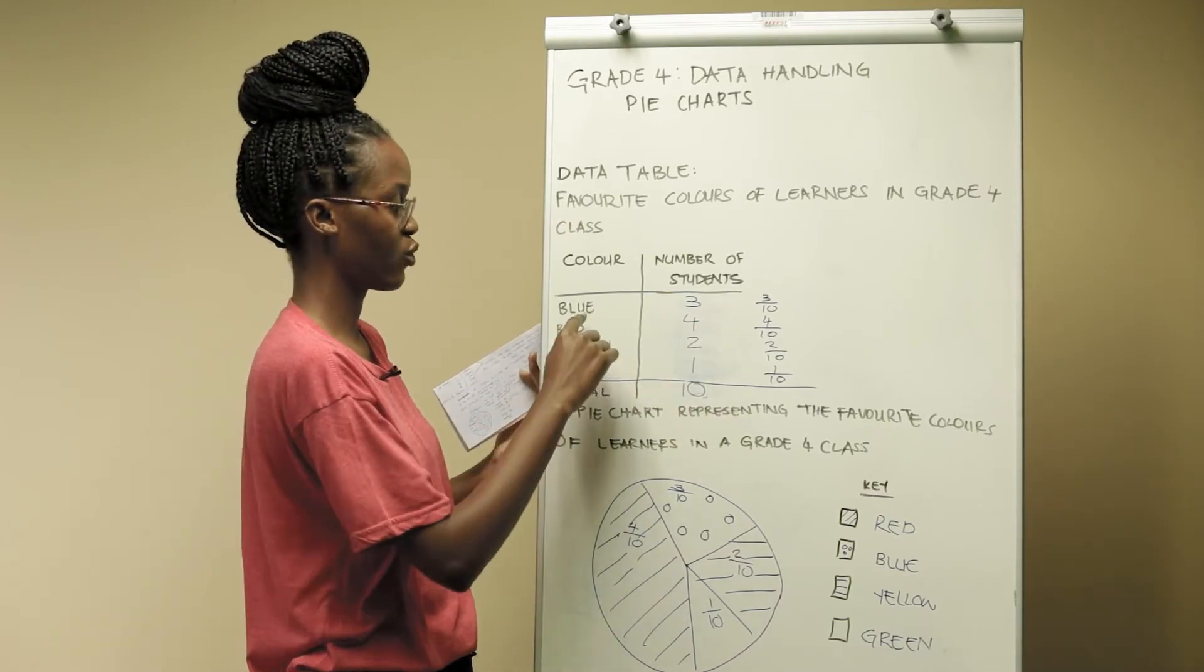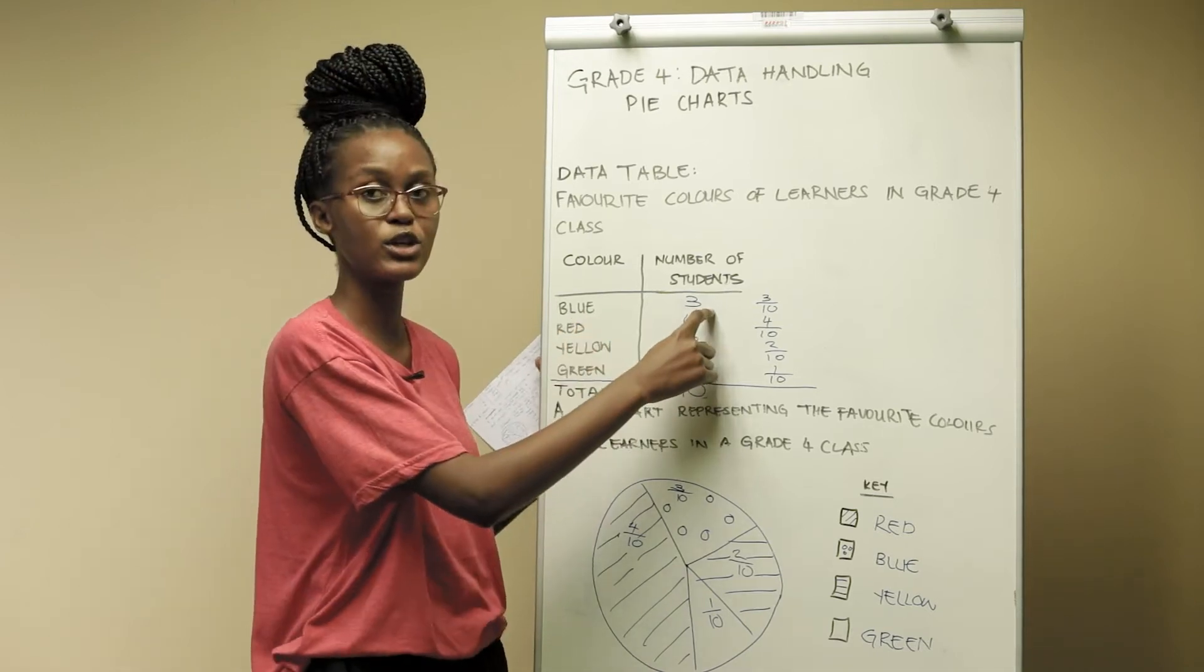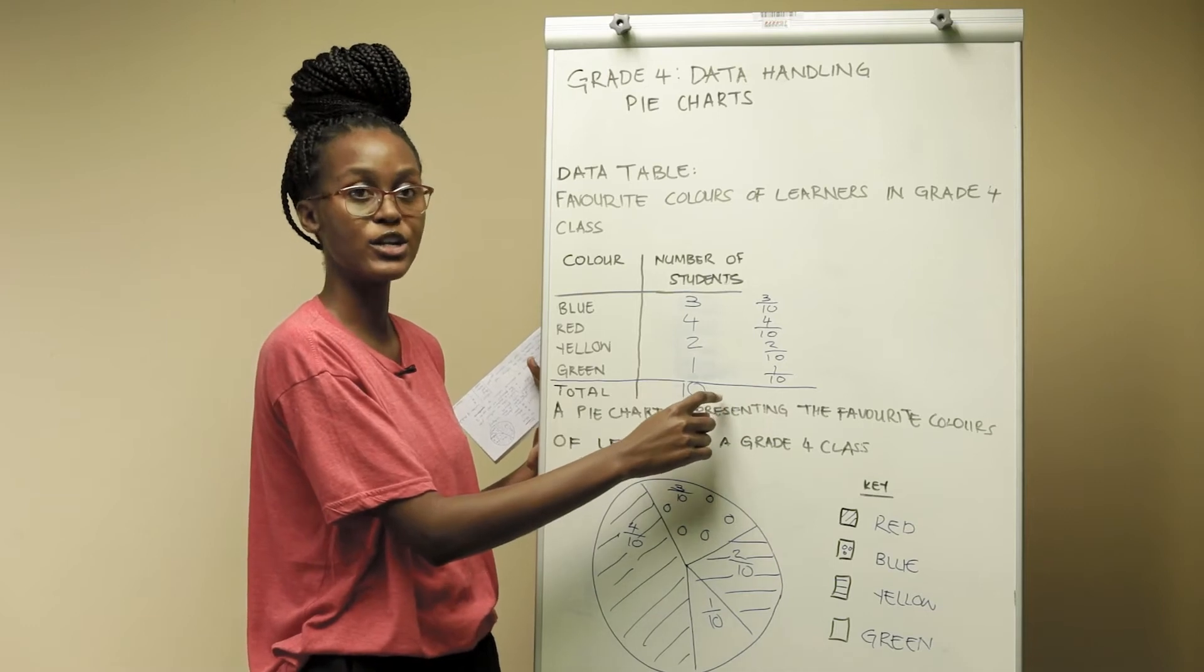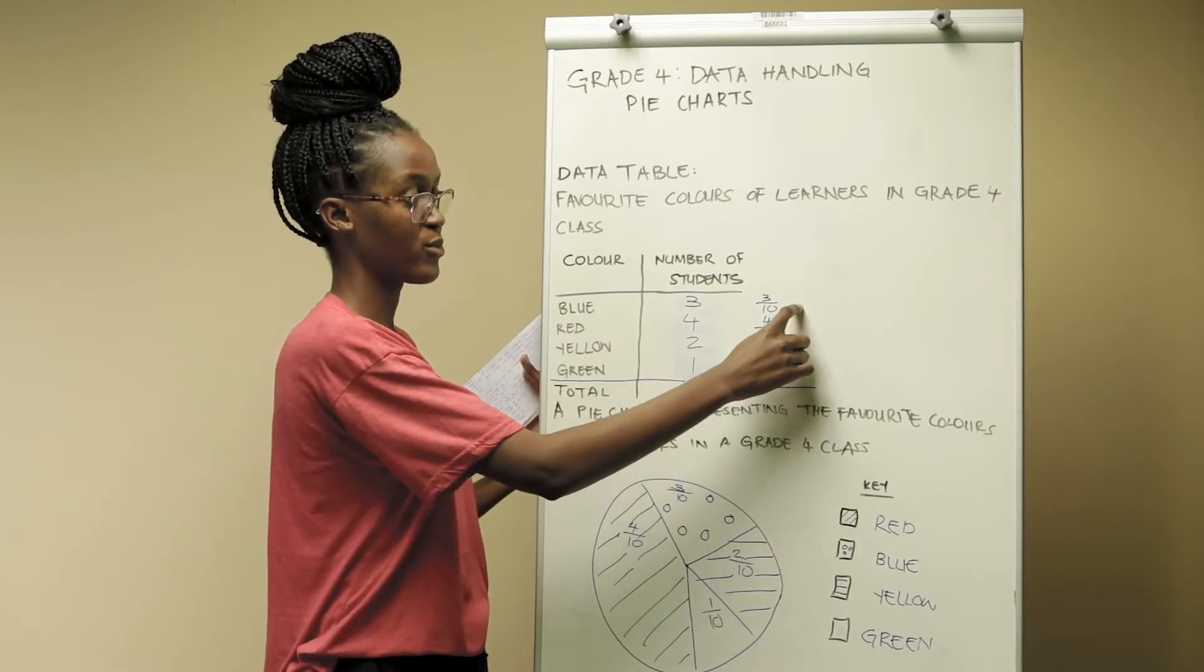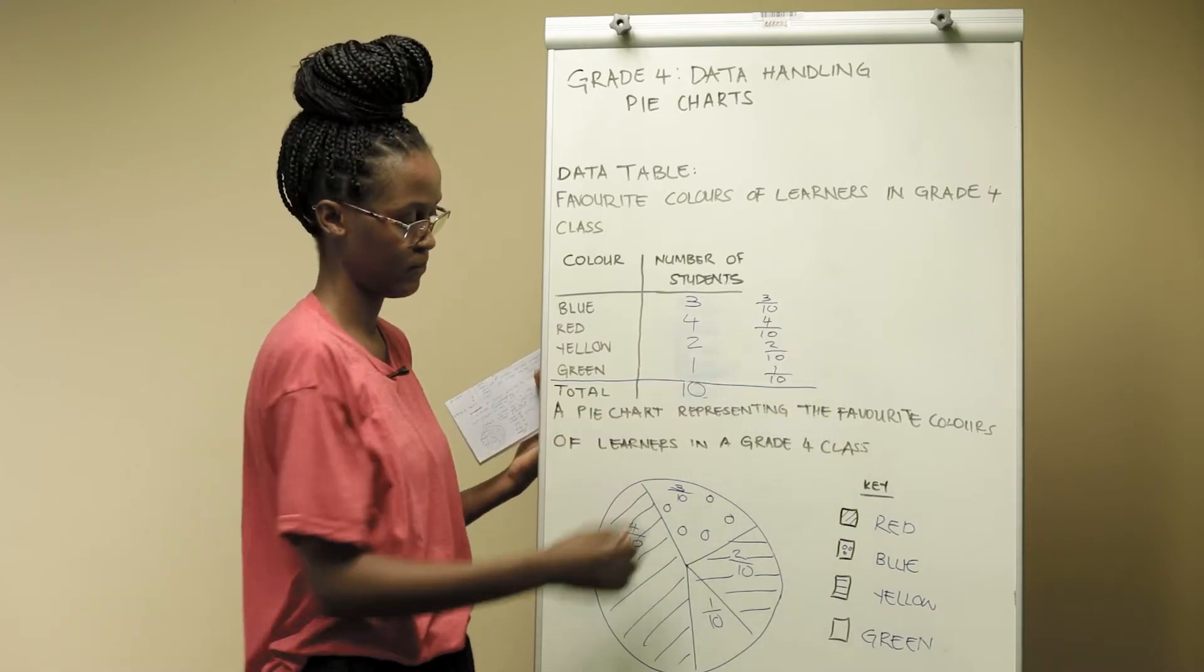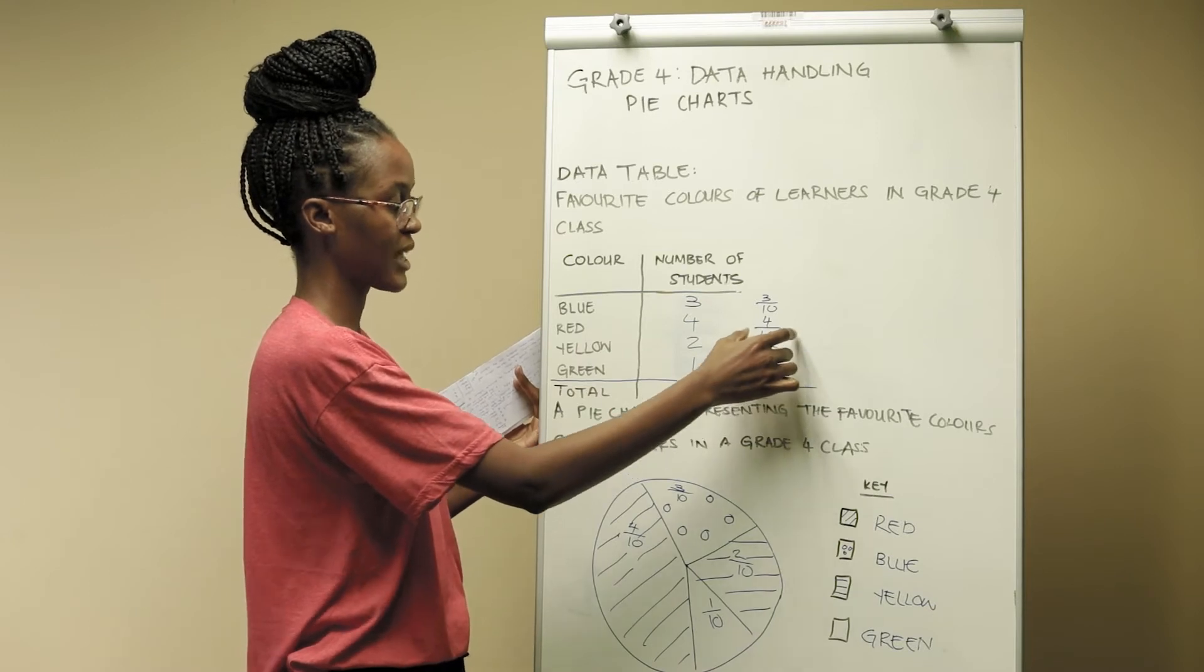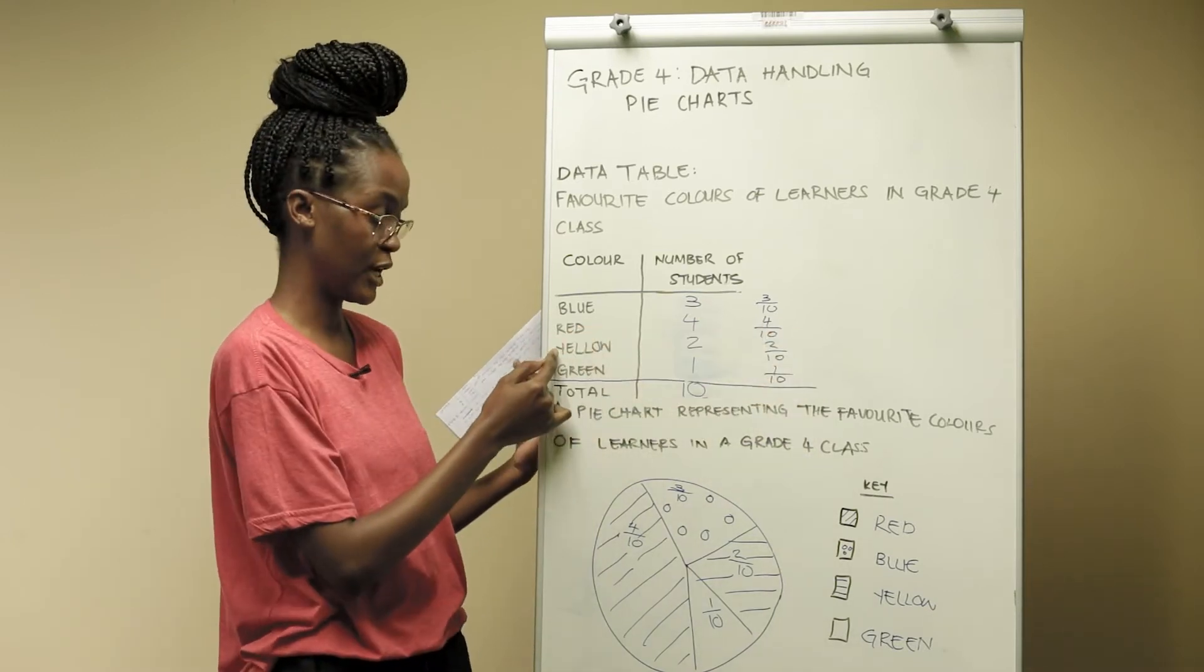For example, if we look at the first colour we have 3 learners out of 10 learners that prefer the colour blue and therefore we've represented this as three tenths. This information follows the same for the red, the yellow and the green.